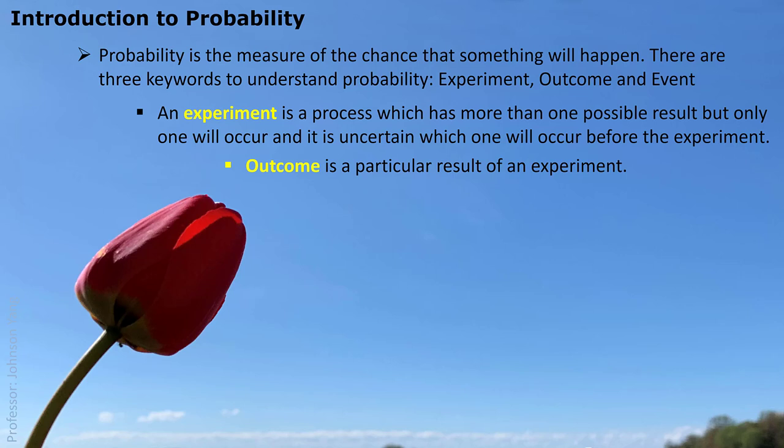Outcome is a particular result of an experiment. The experiment may have many possible outcomes, and we do not know which one will happen before the experiment is done. Event is considered a collection of one or more outcomes of an experiment.